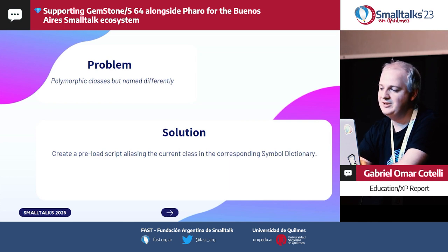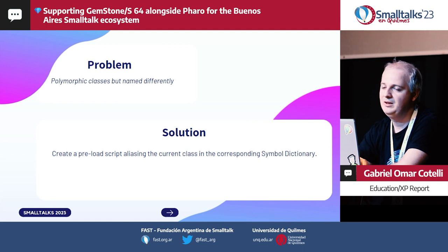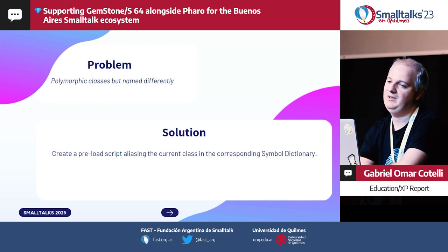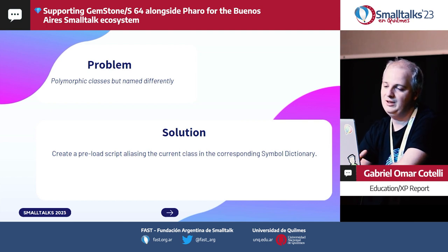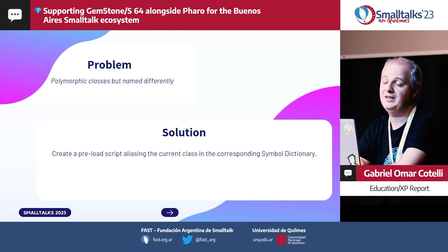In other cases, the class already exists in the implementation but with another name. We hit this a lot with exceptions — for example, in the collection hierarchy, when you try to remove something that's not present, in Pharo you receive an ElementNotFound error, and in GemStone it's called LookupError, but the semantics are the same. Here what we do is use a Rowan pre-load script to alias the existing class in the system with the name expected by the other system, and everything goes smoothly from there.